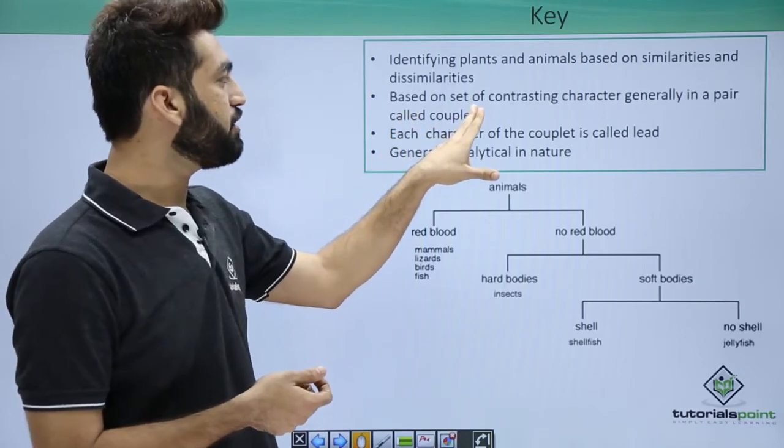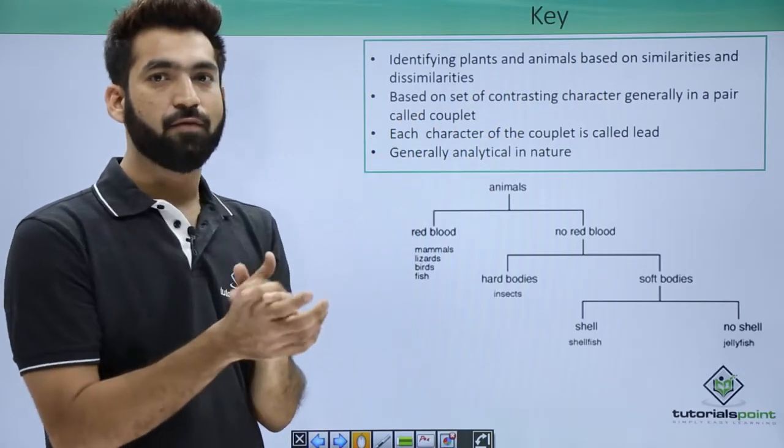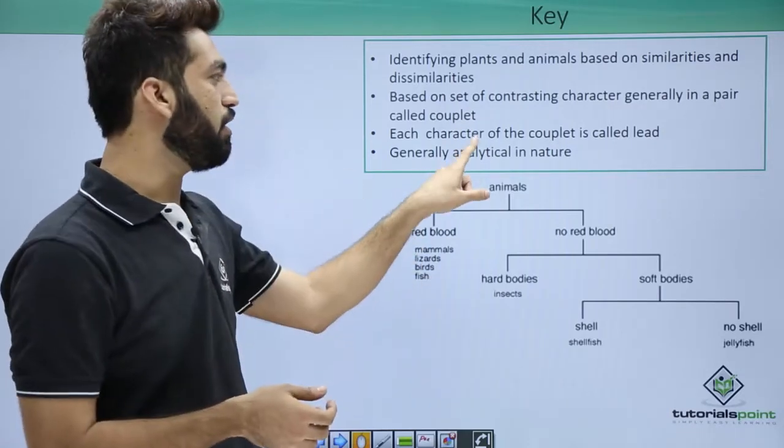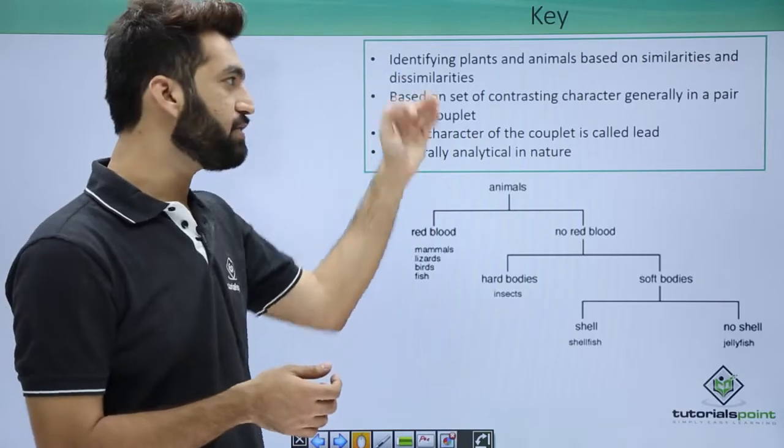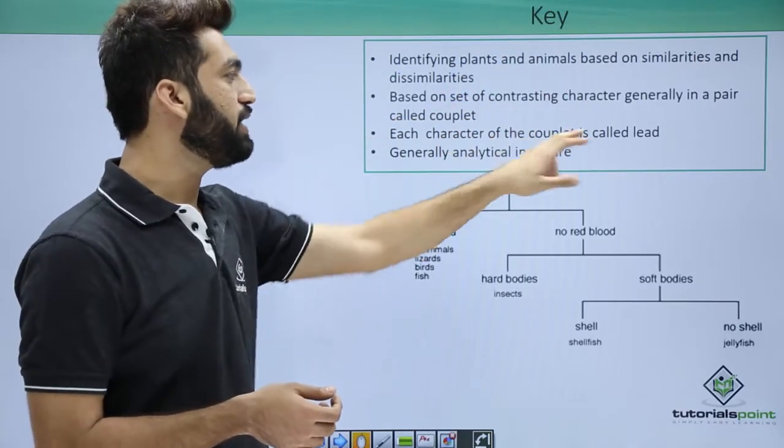Based upon the set of contrasting characters, they remain in a pair which is called a couplet. And each statement of the couplet is called a lead. So you should know about these three things: what is Khi, what is a couplet, and what is a lead.